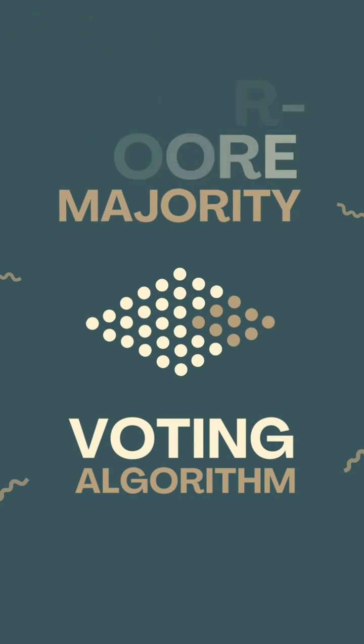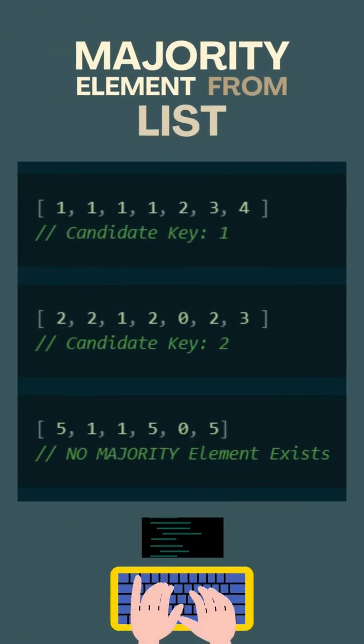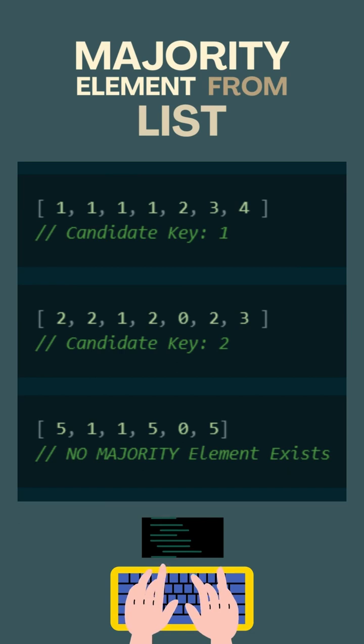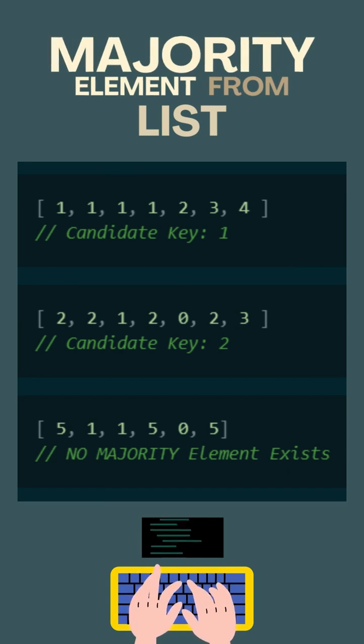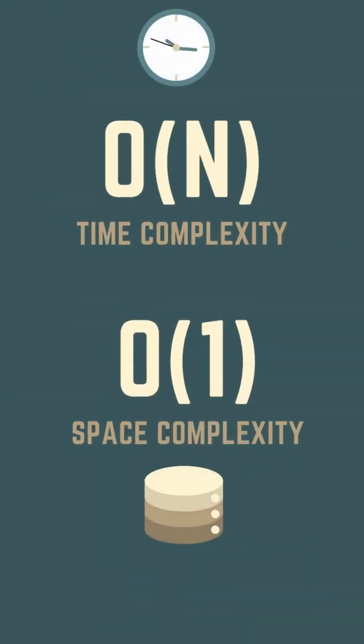Boyer-Moore majority voting algorithm. This algorithm is used to find the majority element from a list in linear time complexity and constant space complexity.